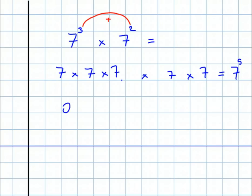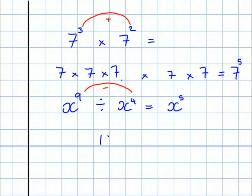When it comes to division, I can use letters rather than numbers. Letters stand for a number. So when it's division, you subtract the indices. So x to the power 9 divided by x to the power 4 is going to be x to the power 5. As an alternative way of showing division, let's use a number again: 13 to the power 6 all over 13 to the power 2. Subtract the indices and we write that as 13 to the power 4.